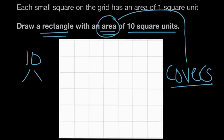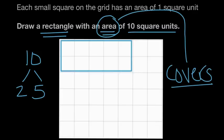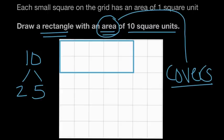We can break up 10 into two groups of five, or five groups of two — either one of those will work. So let's draw ourselves a rectangle. We'll start up here — here's a rectangle that's five units across, making sure it covers the whole square unit. There we go.